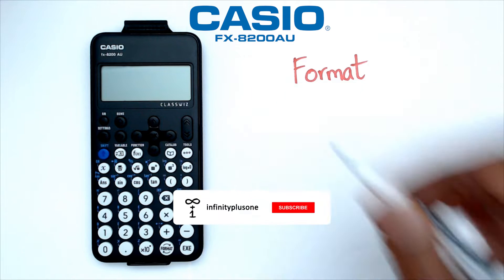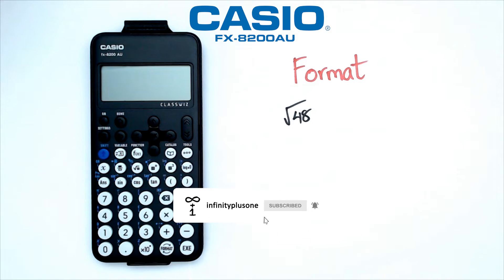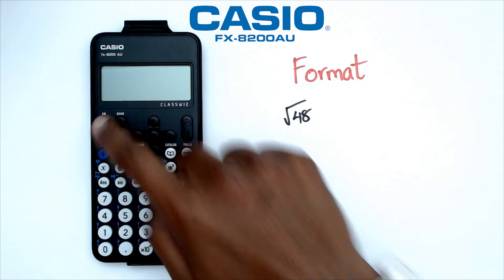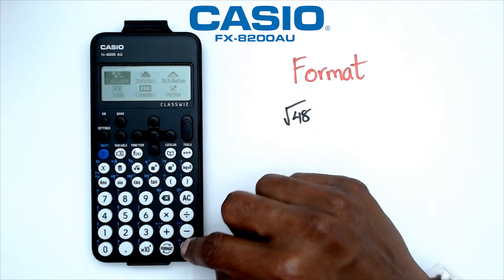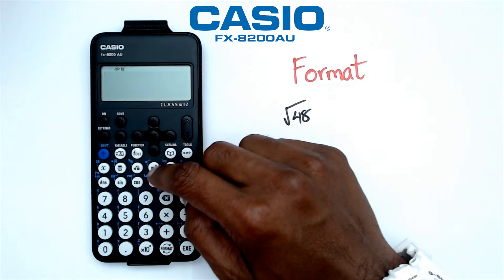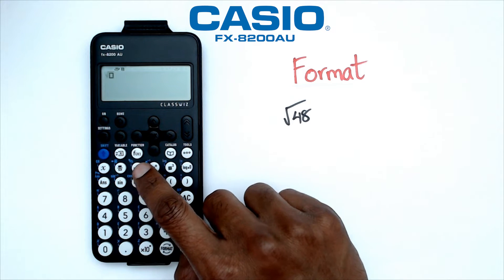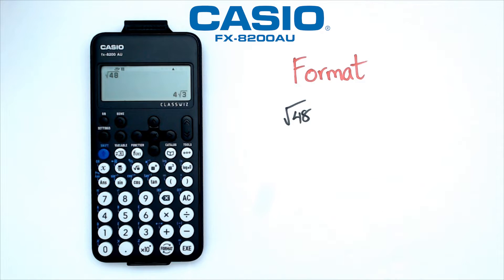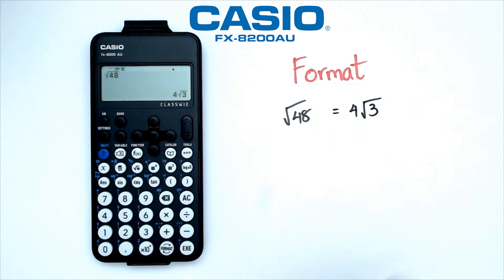Our first question here — I'm going to show you guys what happens when I do square root of 48. So let's switch on the calculator. Under the home menu, we're going to go into calculate and put in square root of 48. The square root button is right here, and we're going to put in 48. So what we're getting is we're actually getting four square root of three as one of the answers.